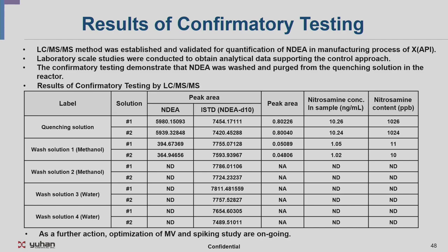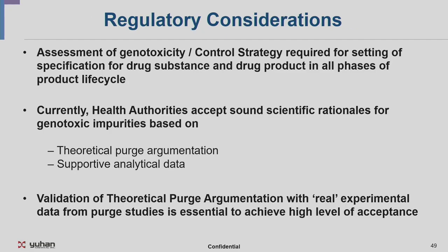Additionally, we are doing a spiking test to check the purge factor in a more quantitative way using quenching solutions that include many organic substances — and we have also done optimization for the method validation. With that study data, in conclusion, we determined the washing methods and number of washes needed. We believe we would be able to get a strategy that is effective — not just theoretical risk assessment, but with analytical testing we created a strategy to eliminate or purge nitrosamines.